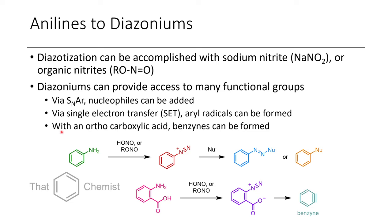Another cool thing you can do with anilines is, if you have an ortho-carboxylic acid group, you can form a benzyne. Anthranilic acid is treated with a nitrite, which converts it to the diazonium. This is then able to eliminate nitrogen gas and CO2 to form a benzyne. You can add all sorts of electrophile-nucleophile pairs to benzynes — it's a really useful intermediate, but very explosive, especially since this produces gases.